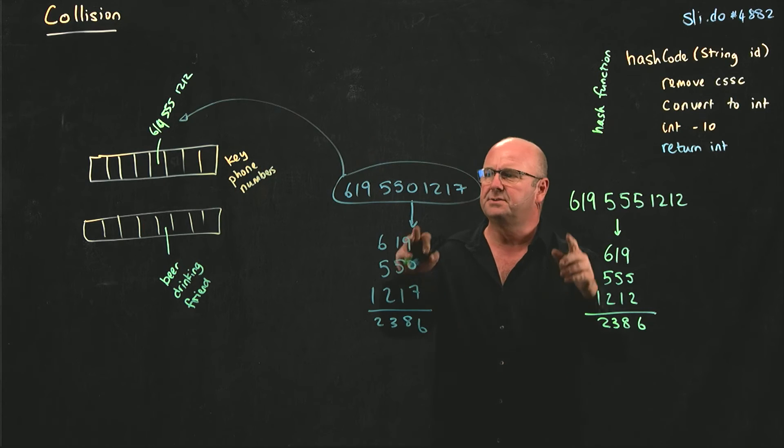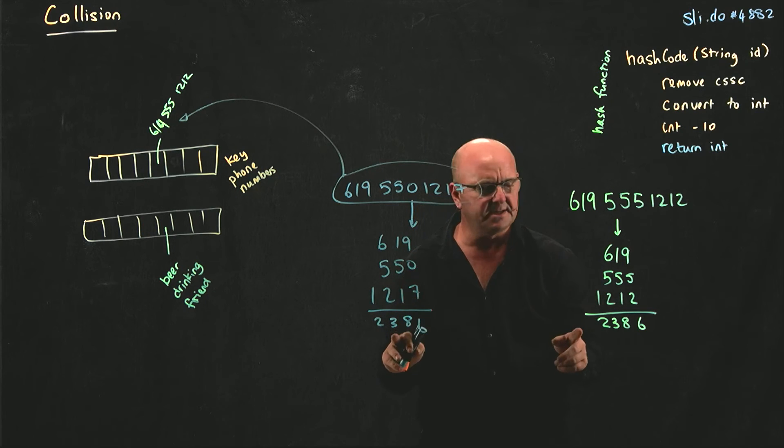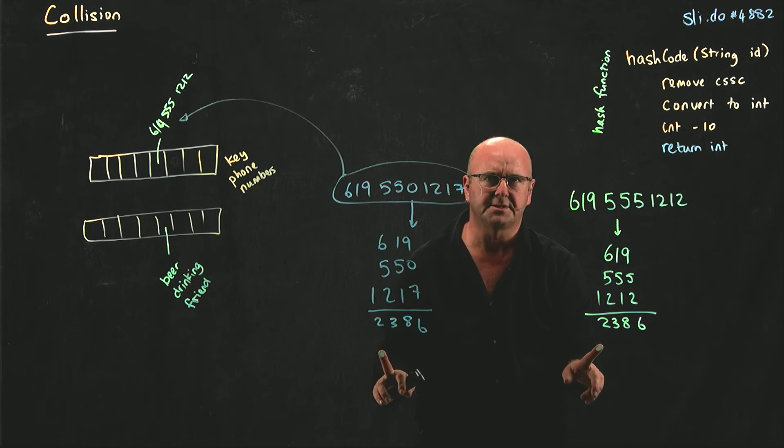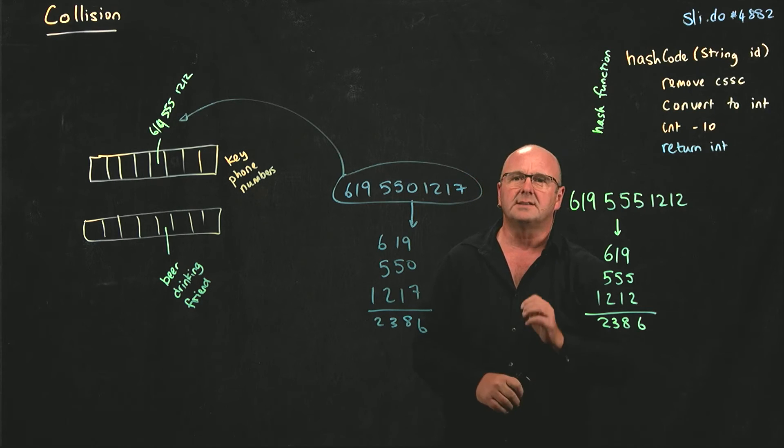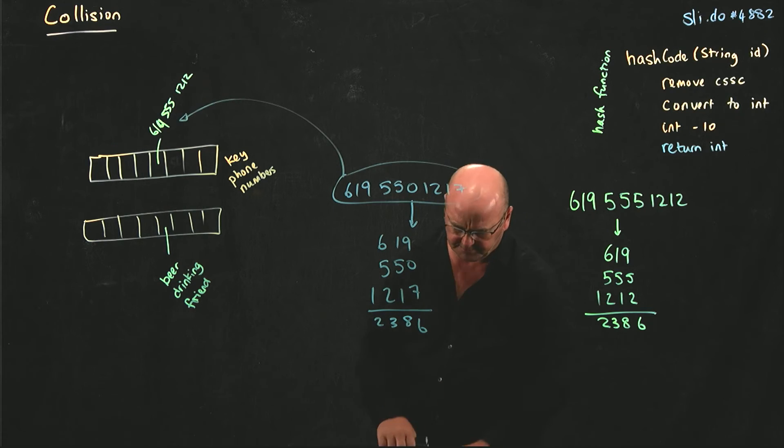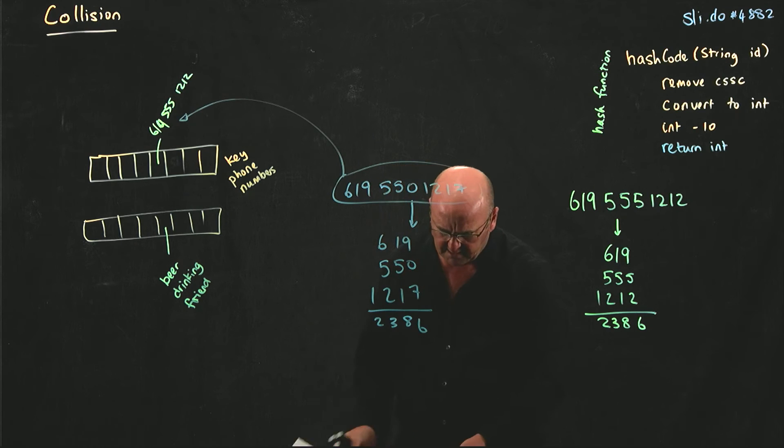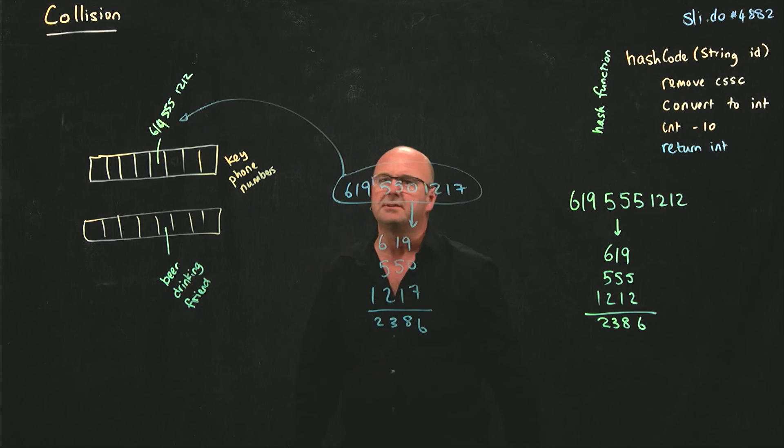So I've got two different keys, but they've resulted in going in the array at the same position. So that's called a collision. So our hash function should try and minimize collisions so that we are not trying to fight when we put things into an array.